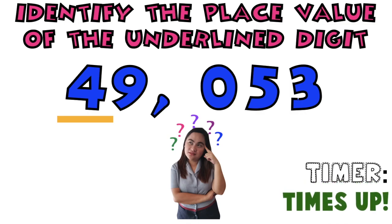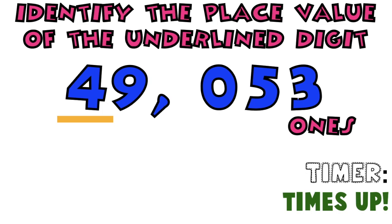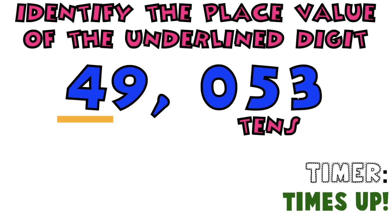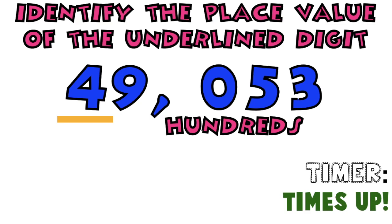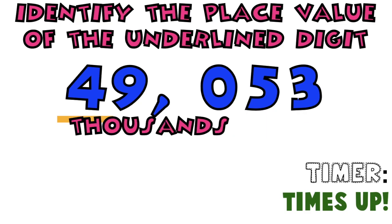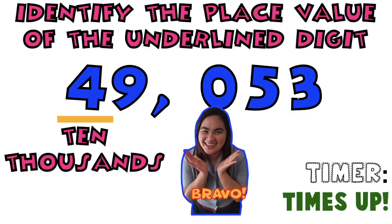Let's see if your answer is correct. Again, children, in identifying the place value, we are going to start from right to left. Let's start at digit 3. Digit 3 is ones. Very good. Digit 5 is tens. Digit 0 is hundreds. Digit 9 is thousands. How about digit 4? Digit 4 is ten-thousands.